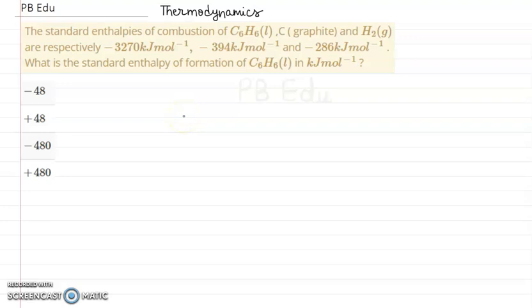Hello and welcome to PbEdu, where we solve all your queries related to chemistry. Today we have a question on thermodynamics. The standard enthalpies of combustion of C6H6 liquid, carbon graphite, and H2 are respectively minus 3270 kJ/mol, minus 394 kJ/mol, and minus 286 kJ/mol.